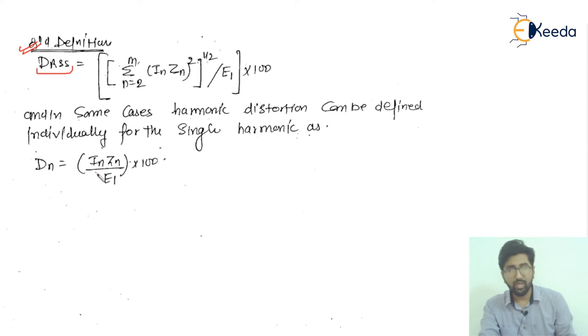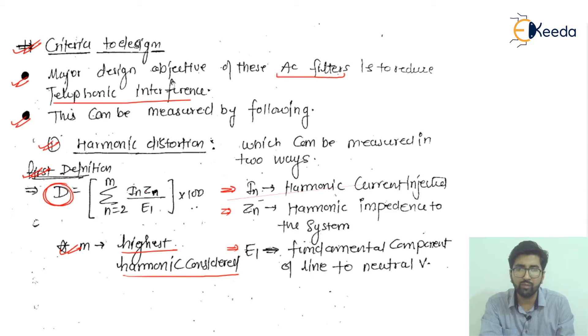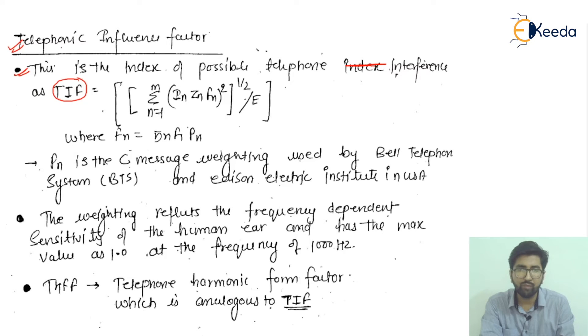The second measurement is the telephonic influence factor. This is the index of possible telephonic interference, defined as TIF. The formula is sigma from n=1 to M of (In × Zn × Fn)² under square root, divided by E. Fn equals F1 × Pn, where Pn is the C-message weighting.